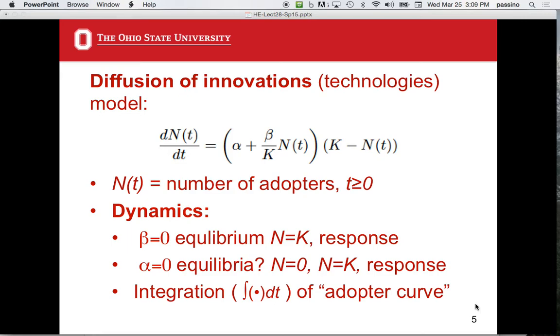If dN/dt is equal to minus alpha N and N starts off positive, the slope is negative and it's going to go down. The number of adopters will decrease. On the other hand, if we're positive, it would go up. Now, with this K here, what I'll just tell you is you have alpha K minus alpha N.